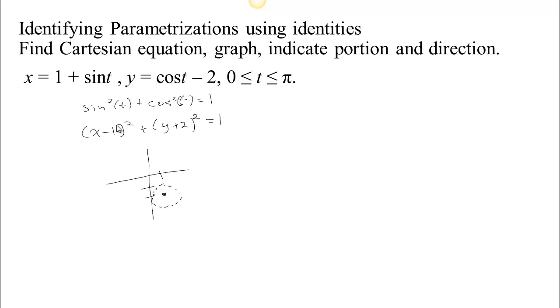So because X and Y have these relationships to t, and because of this identity, we know that X and Y always lie somewhere on this circle. The question is, do we see the entire circle or just part of it? And as time moves forward, what direction will we move along that curve?